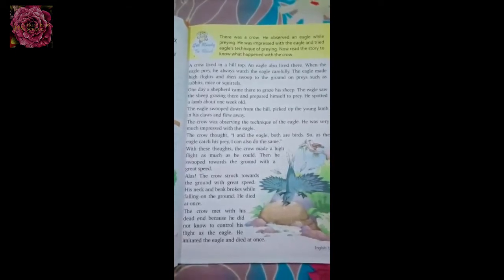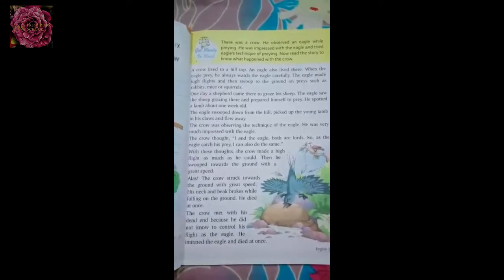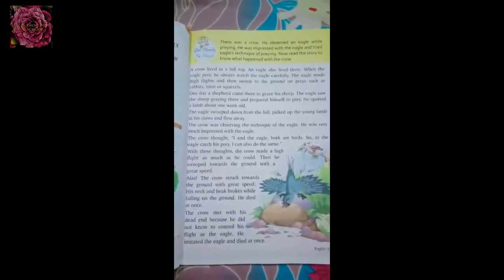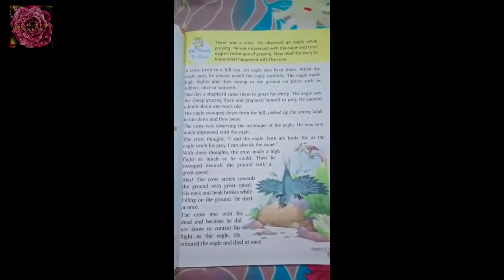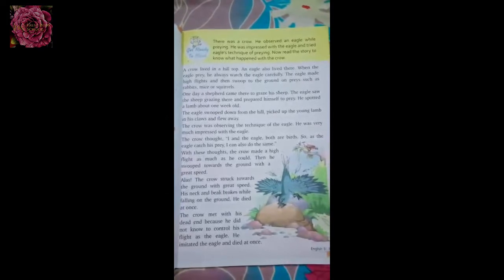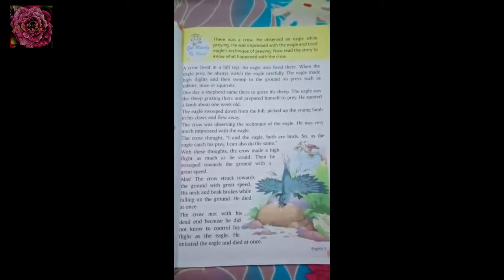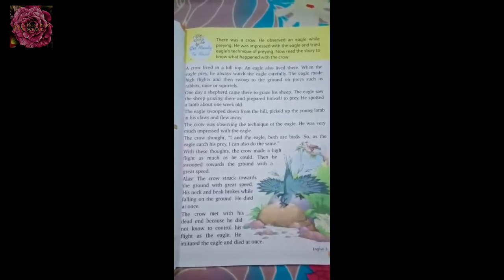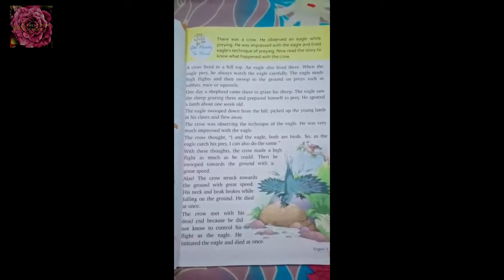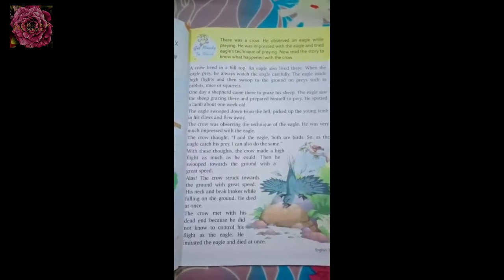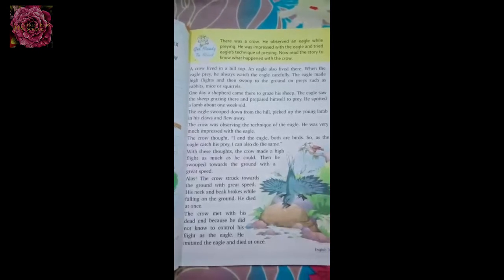Why did this happen? Because the eagle and the crow are very different. The eagle can control his speed, but the crow does not know how to control his technique. He could copy and imitate the eagle's activity, but he could not control himself, and so he crashed to the ground and died.